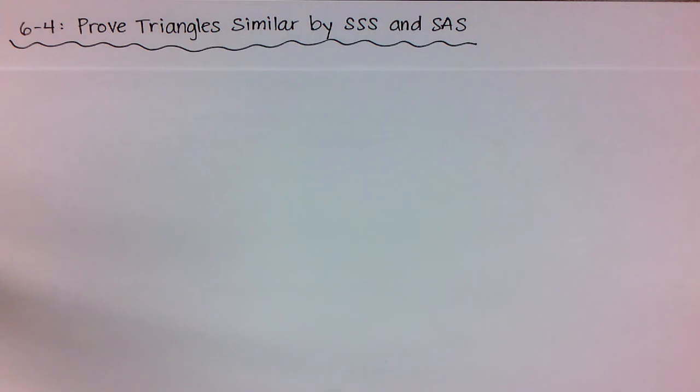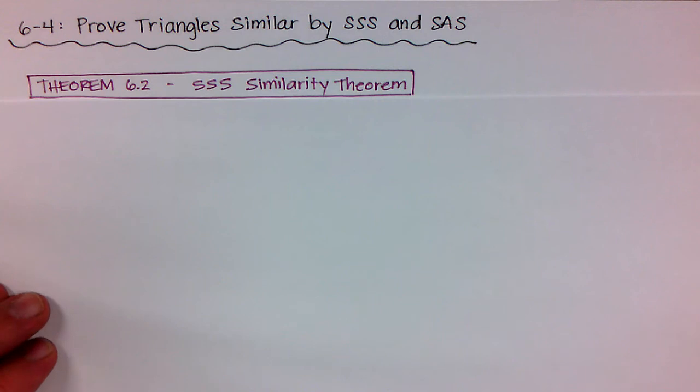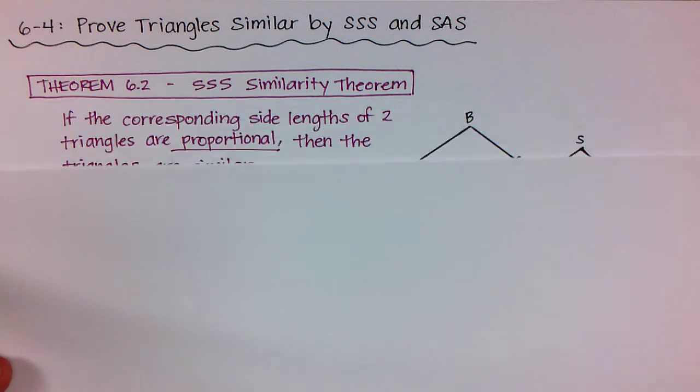Now we know that we had some congruence theorems for SSS and SAS, but now these are going to be some similarity theorems. The first one we're going to talk about is theorem 6-2 titled the SSS, so side side side similarity theorem. And what it says is that if the corresponding side lengths of two triangles are proportional, then the triangles are similar.